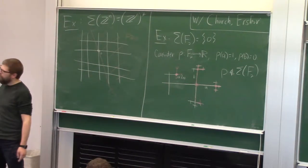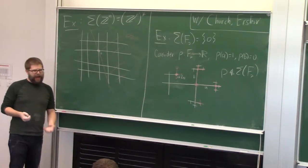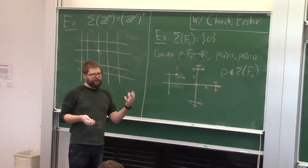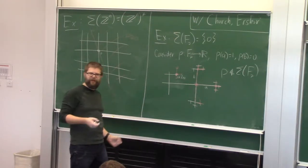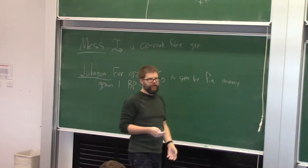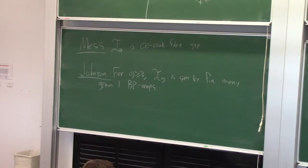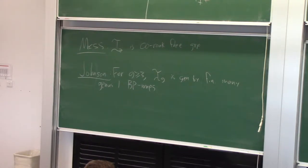Those are two contrasting examples. Another example — relevant to people in this audience — is that if you look at a hyperbolic 3-manifold that fibers over the circle, the BNS invariant is the cone on the interiors of the fibered faces. In many ways you can view the BNS invariant as a generalization of the Thurston norm. The number of components is probably usually infinite if the subgraph is not connected, though I'm not 100% sure.